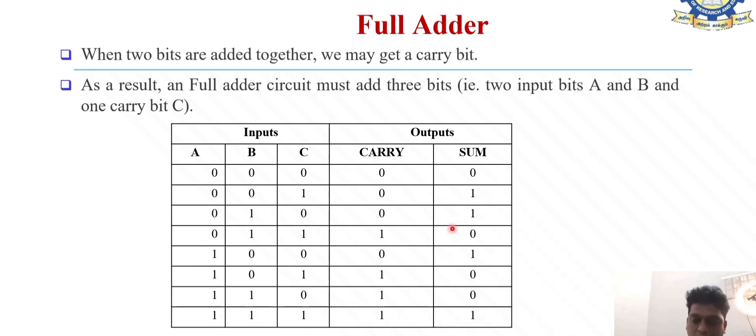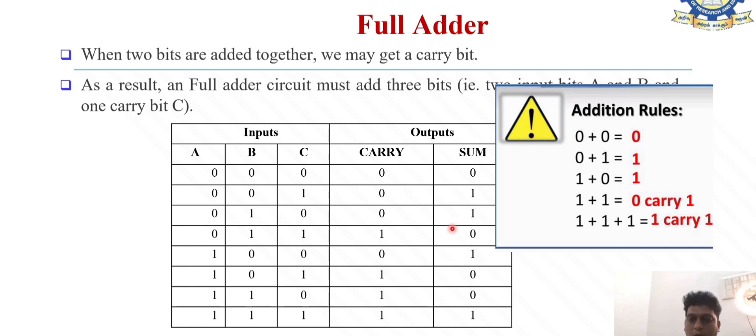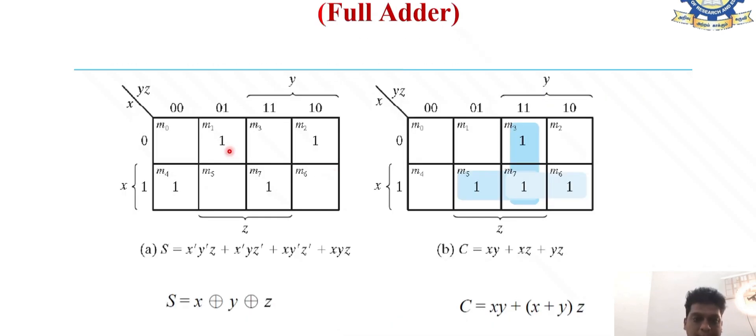When we are adding 1 plus 1 plus 1, we get sum 1 and carry 1. We know the addition rules: 0 plus 0 equals 0, 0 plus 1 equals 1, 1 plus 0 equals 1, and 1 plus 1 equals 10. When we add another 1, that is 1 plus 1 plus 1 equals 11, so sum 1 and carry 1. We plot the K-map for sum and carry. It's a 3-variable K-map, so 2 to the power 3 gives 8 cells.